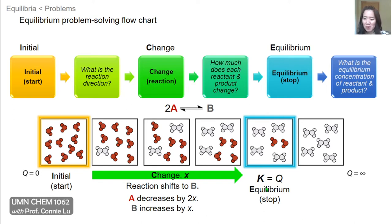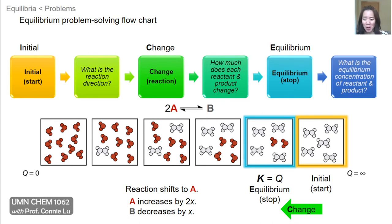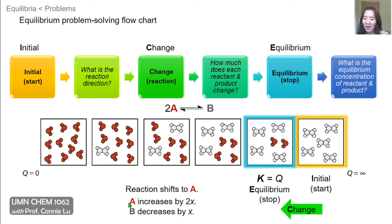We can have a different version of this problem with the same chemical reaction and equilibrium constant, but with a different initial starting point. If we start at the far end with 100% B, the reaction direction is going to proceed towards the left, or towards A. Q can reach K there and the reaction will stop. We will still change by an amount X, but now we are building reactants — A will increase by 2X and B will decrease by X.